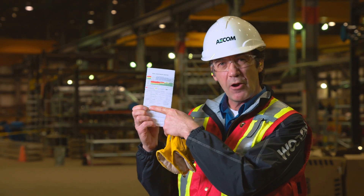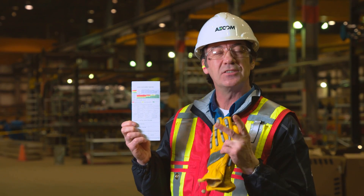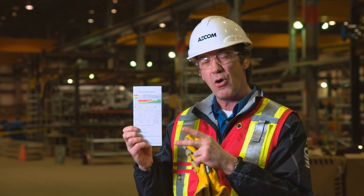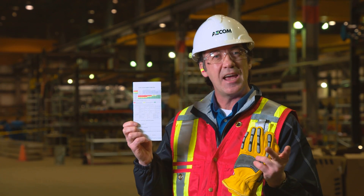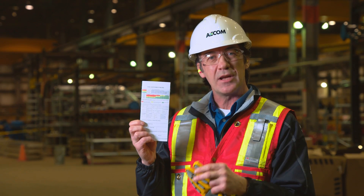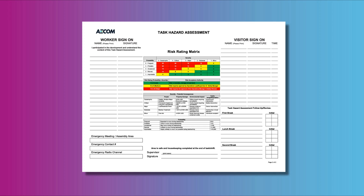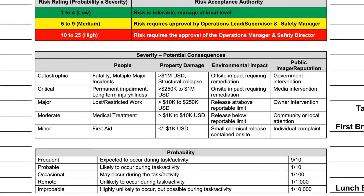So let's take a more in-depth look at the risk matrix. In this area of the card you'll find definitions for probability and severity. These will be your guide as to what number or risk color your work falls under. Now let's take a minute to look at how severity is broken down under the people category. There are five categories of severity: catastrophic, critical, major, moderate, and minor or first aid.